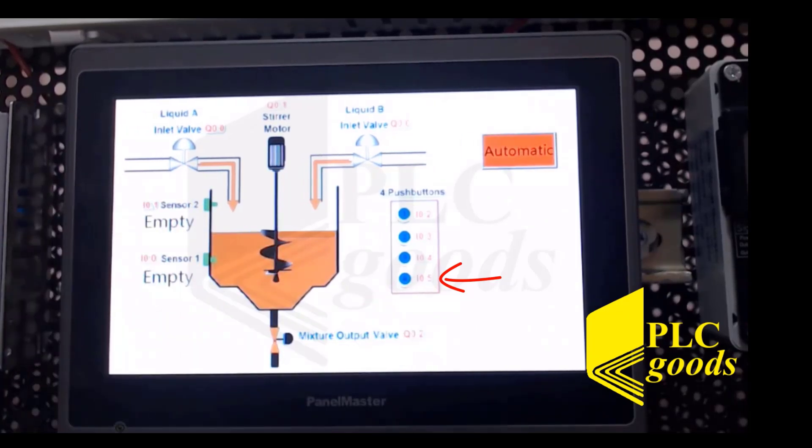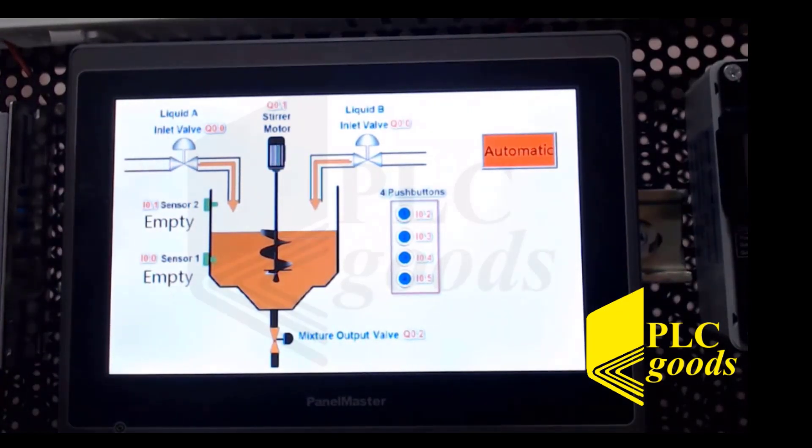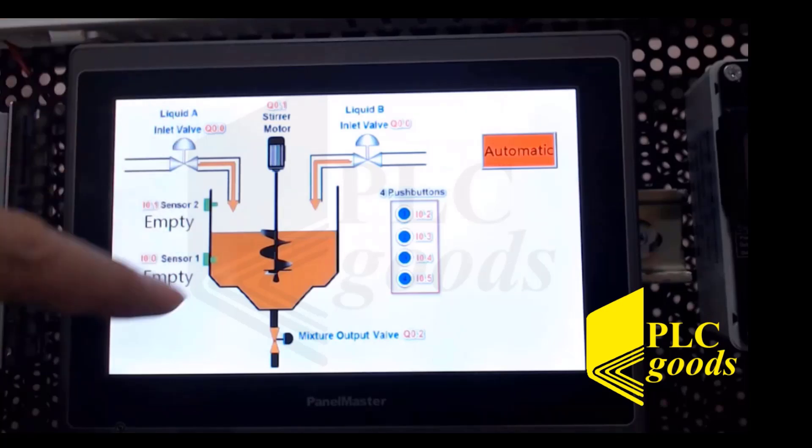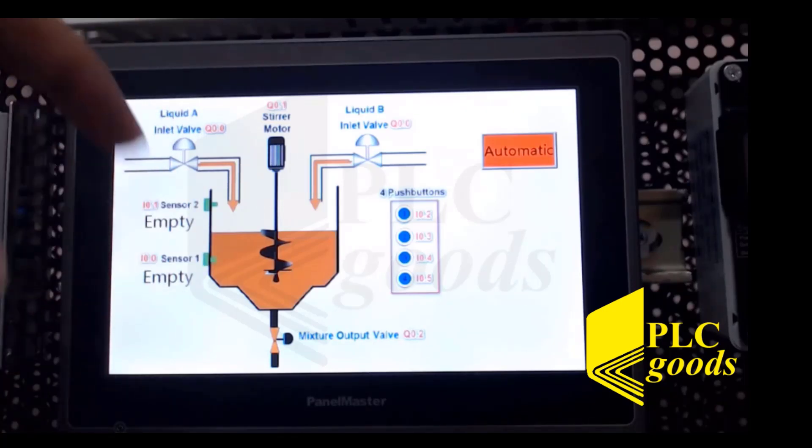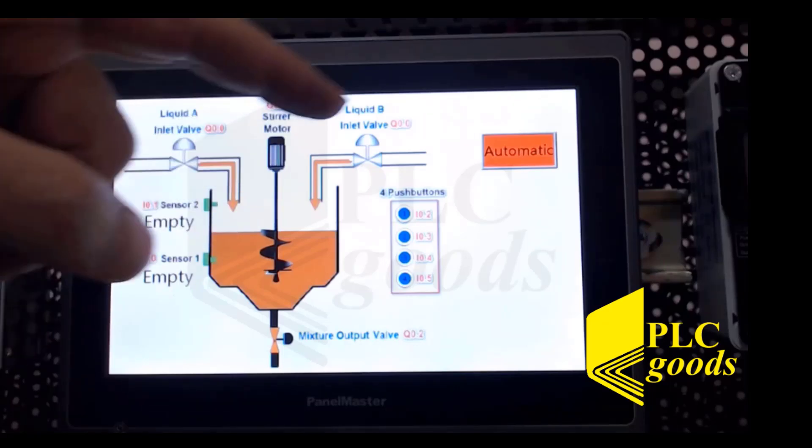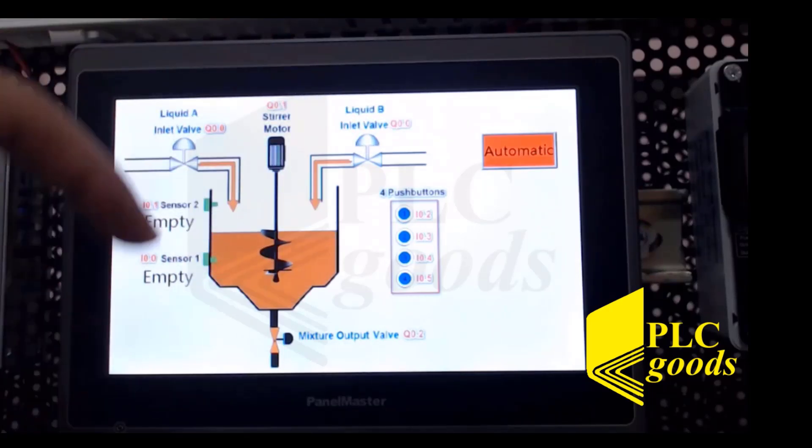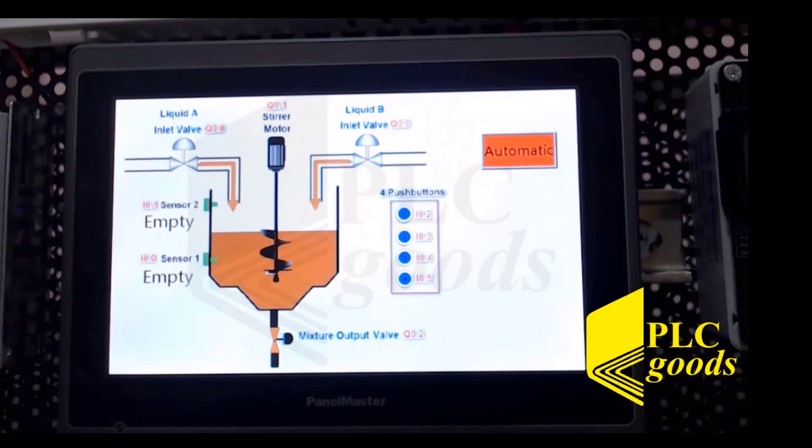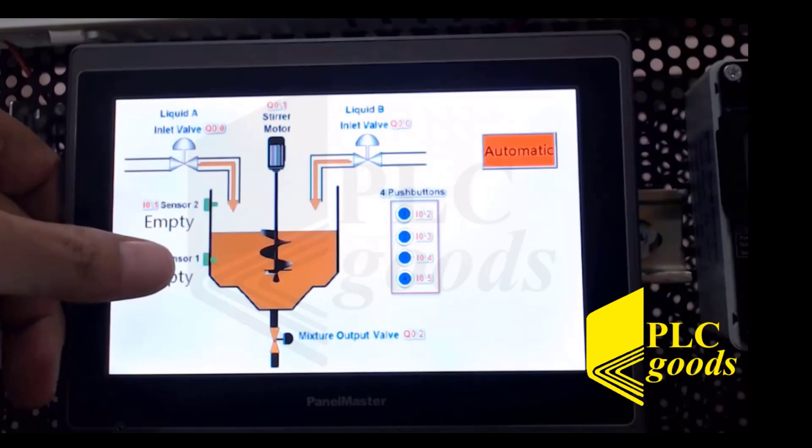All right, now in automatic mode, the system right now is saying okay the container is empty so I need to fill it up. So these two valves are pushing and pulling the water or liquids. So I come turn this on.